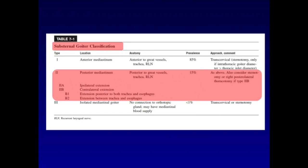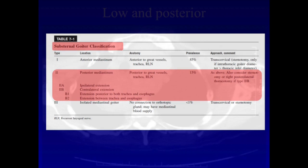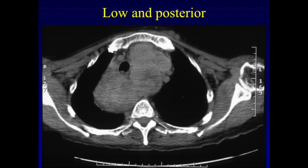We have offered a classification system for substernal goiter: Type 1, that which extends to the anterior mediastinum; Type 2, that which extends to the posterior mediastinum. Within posterior mediastinal goiters, the recurrent laryngeal nerve is displaced anteriorly. Type 3 is isolated mediastinal goiter with no connection to the orthotopic thyroid. This is an example of a Type 2 posterior mediastinal goiter, which extends to the contralateral thorax between the trachea and esophagus.